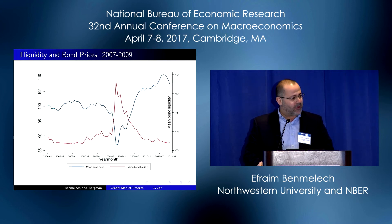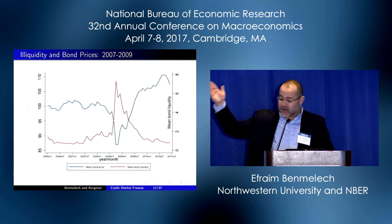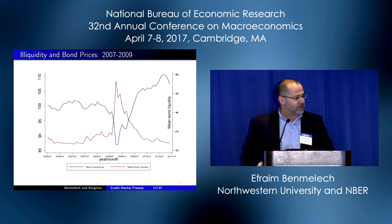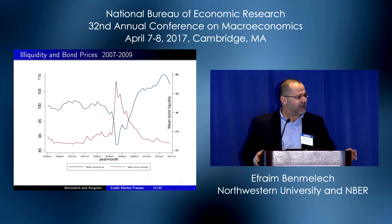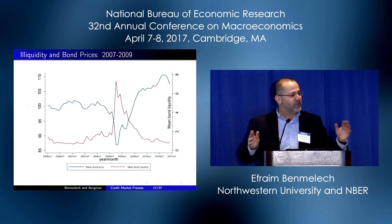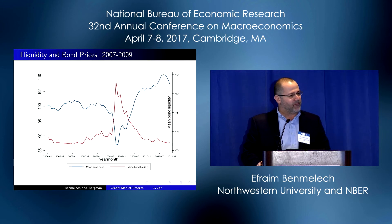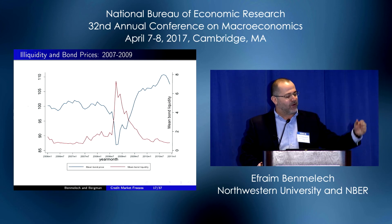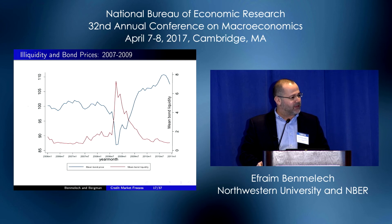The blue line is the price of bonds — corporate bonds, plain vanilla bonds, nothing exotic, no asset-backed securities. Following Lehman, you can see there was a sharp drop of more than 10% in prices of bonds that persisted for a couple of months. The red line is a measure of illiquidity. We use three different definitions of liquidity in another paper and they all show the same picture. This is a measure of illiquidity based on the gamma measure developed by Bao, Pan, and Wang, which follows the Roll 1984 notion of liquidity. You see very clearly that prices and illiquidity are negatively correlated.